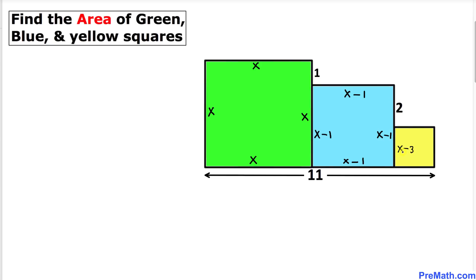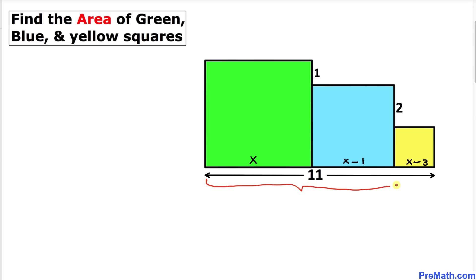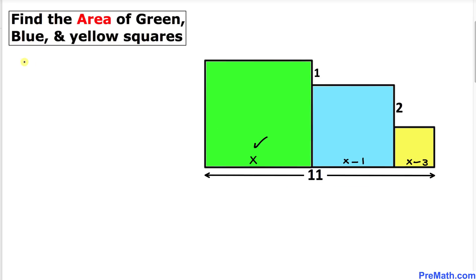So for the yellow box, this side turns out to be x minus 3. All four sides of the yellow box are x minus 3. Now we know that this whole base length of 11 is equal to the sum of the individual lengths: x, then x minus 1, and then x minus 3. So we can write: x plus (x minus 1) plus (x minus 3) equals 11.